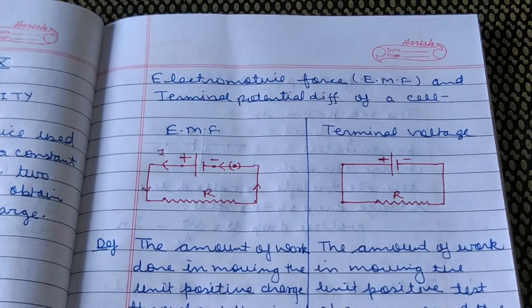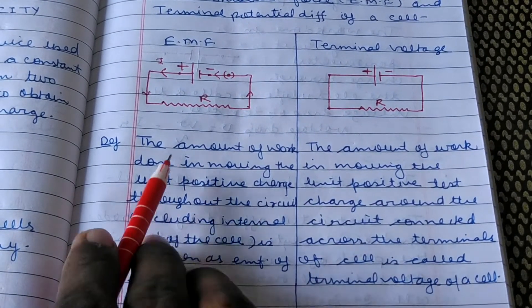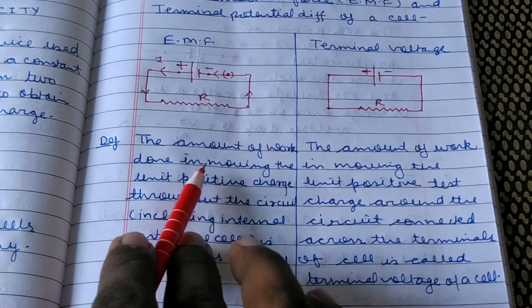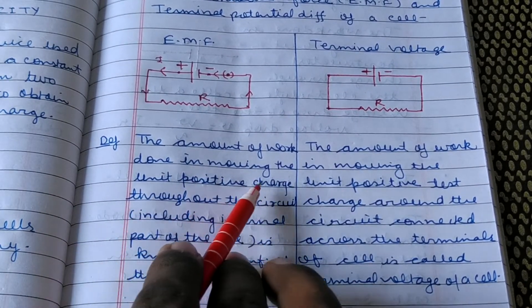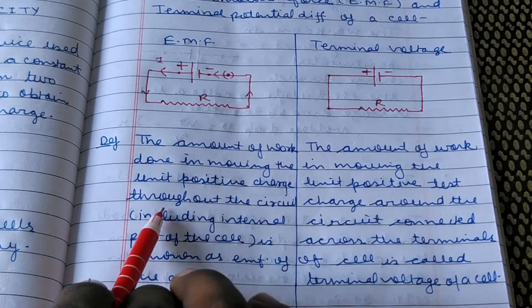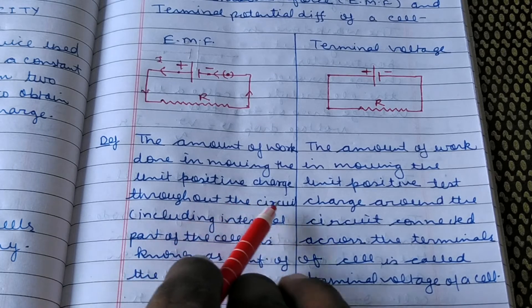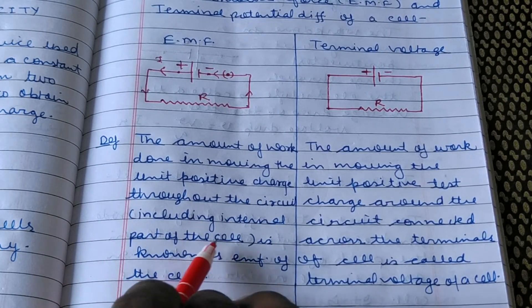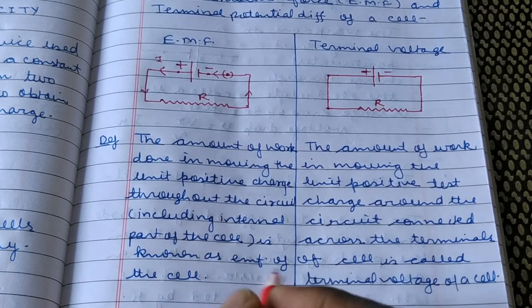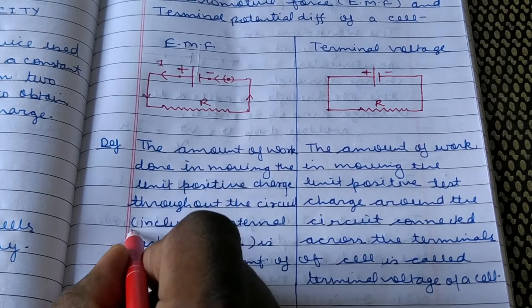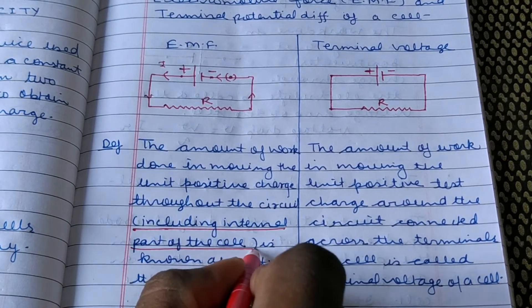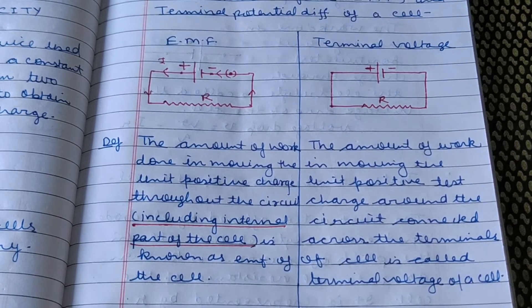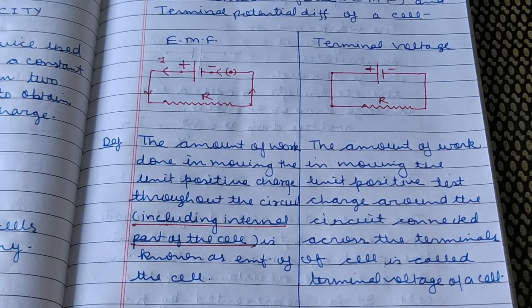This is the same definition: the amount of work done in moving the unit positive charge throughout the circuit, including the internal part of the cell. The internal part of the cell means the electrode and electrolyte inside the cell.